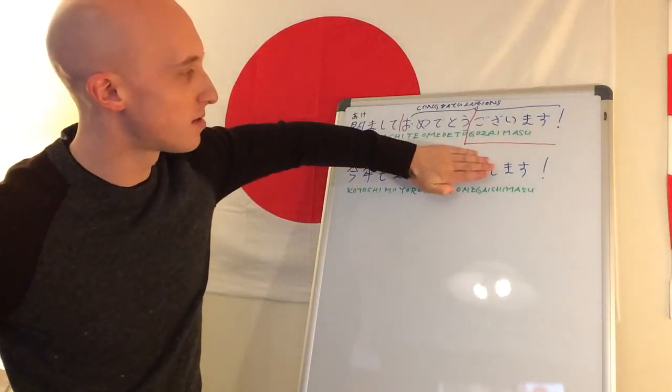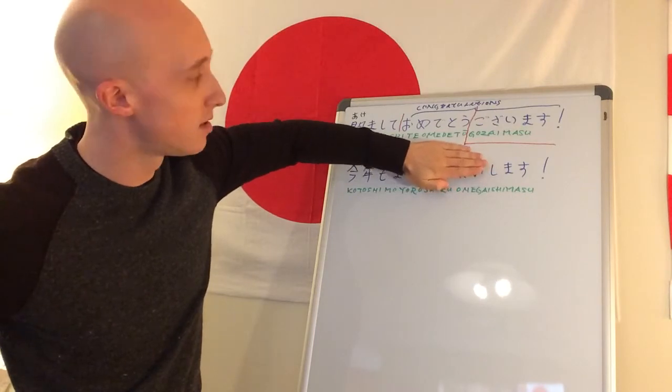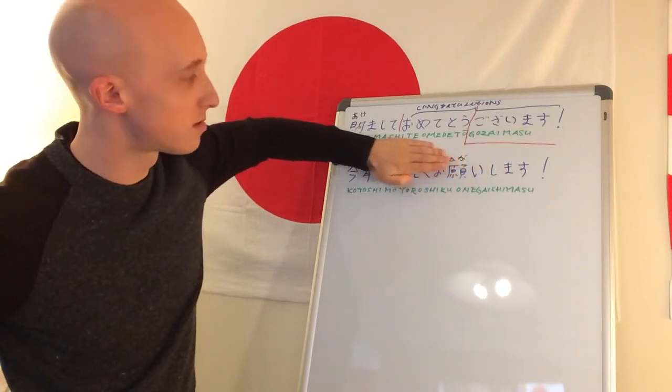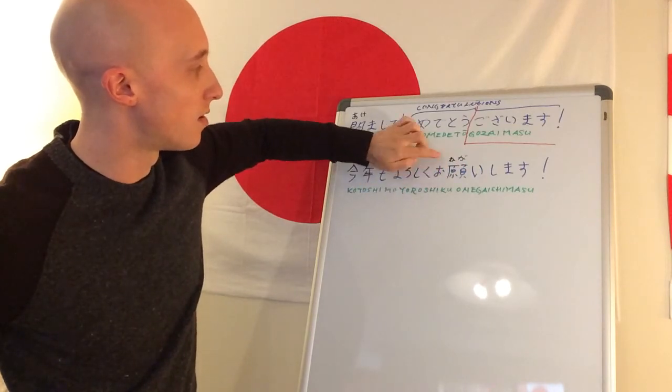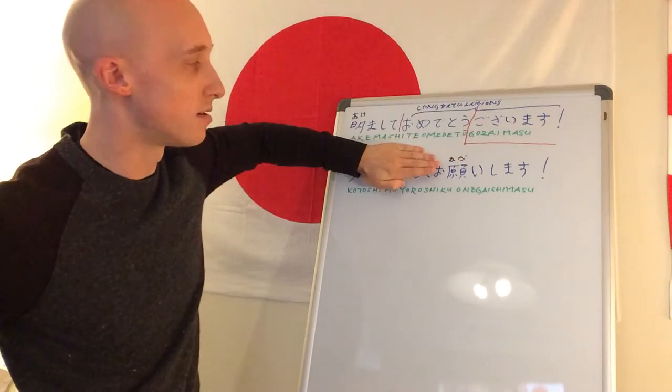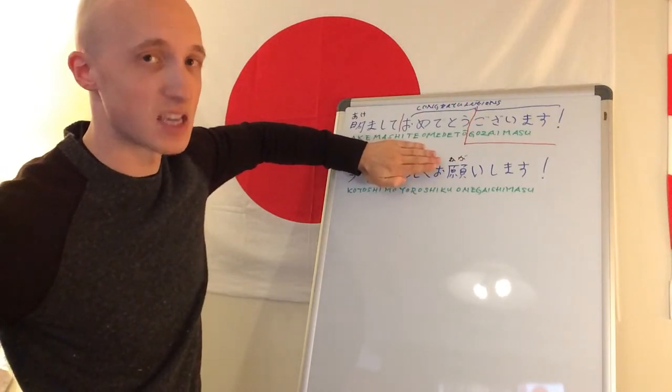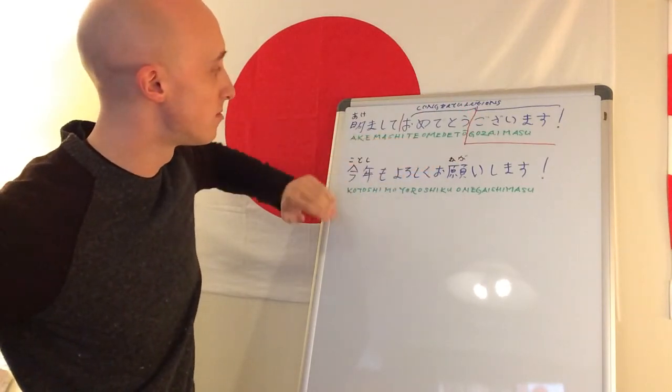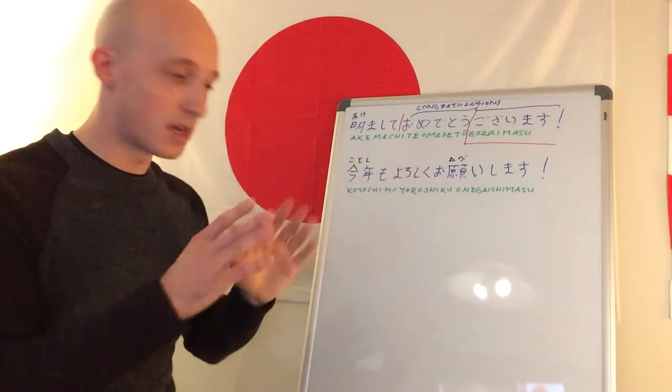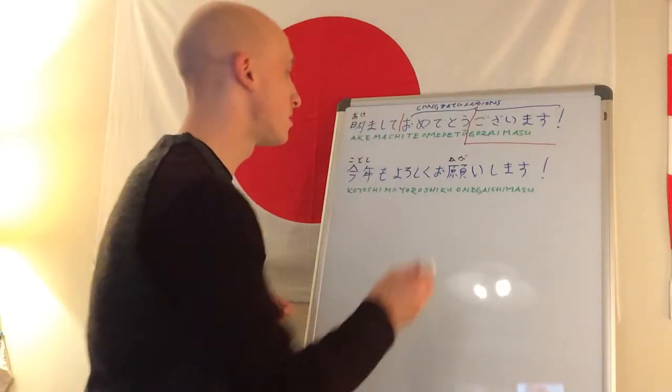So that said, we start with the masu and we work our way backwards. So we have masu, shimasu, ishimasu, and now we have our negai. So we have negaishimasu. Let's put that all together. Negaishimasu, negaishimasu. O negaishimasu, o negaishimasu. So that is our last word here, onegaishimasu.